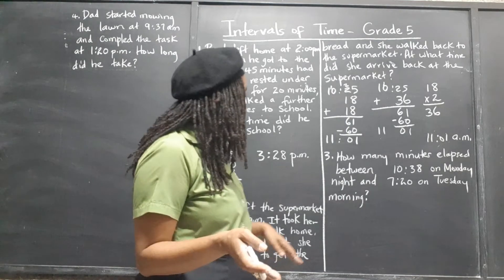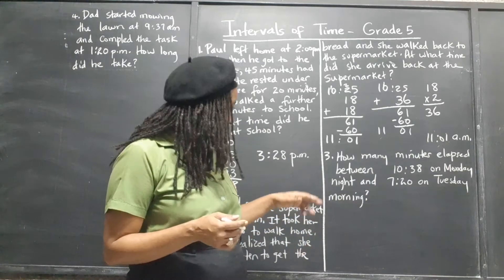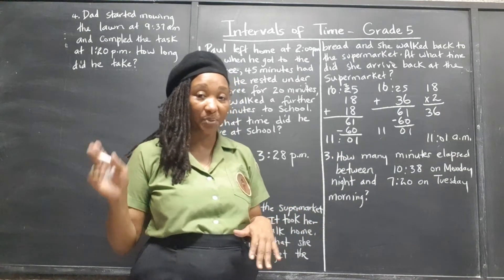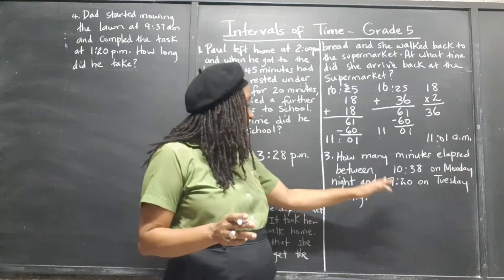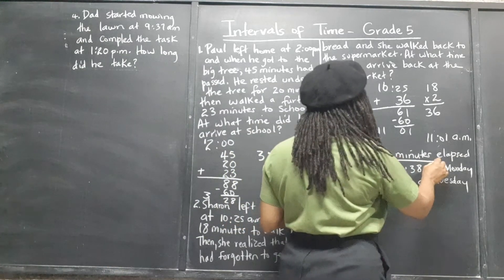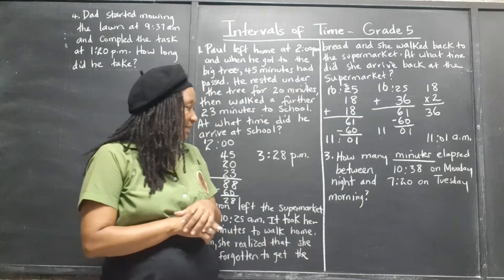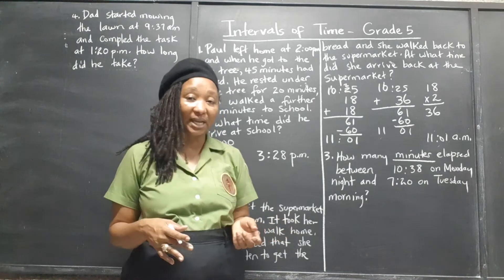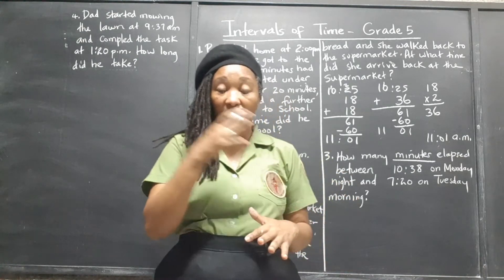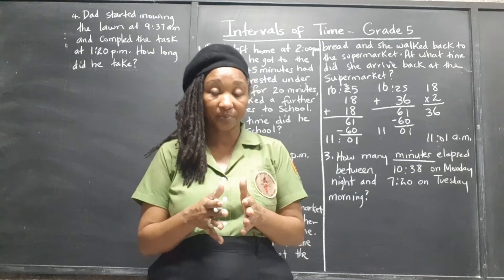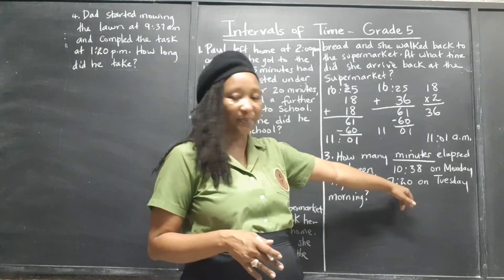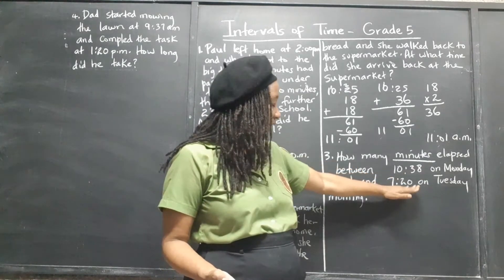Problem three: how many minutes elapsed between 10:38 on Monday night — that's 10:38 PM — and 7:20 on Tuesday morning? They want the answer in minutes. Remember, we're going to cross over from Monday night to Tuesday morning. We're going up to 12 midnight and then adding the additional hours from midnight to 7:20. We know it's 7 hours and 20 minutes from midnight.